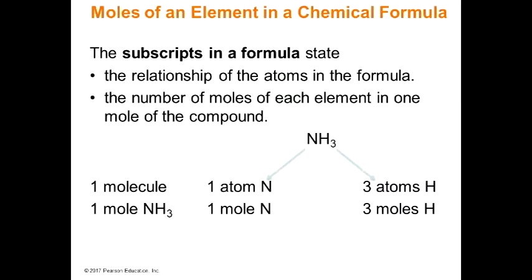We take a look at the subscripts and the atoms and we simply count. Here we have one atom of nitrogen and three atoms of hydrogen. Since these are standard values from the periodic table, they may be used as conversion factors. Since they refer to universal standards, we don't use these values in determining our significant figures.